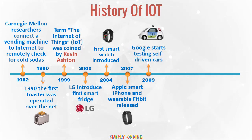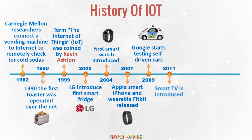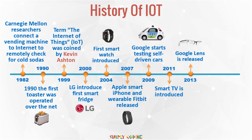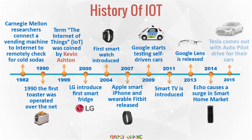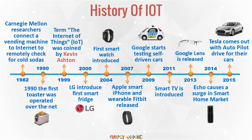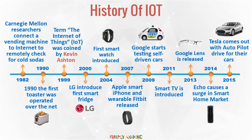In 2009, Google started testing self-driving cars. In 2011, smart TV was introduced. In 2013, Google Lens was released, followed by Echo in 2014, which caused a surge in the smart home market. IoT continues to grow dramatically with Tesla coming out with Autopilot in 2015, and IoT continues to proliferate with cheaper devices and sensors.